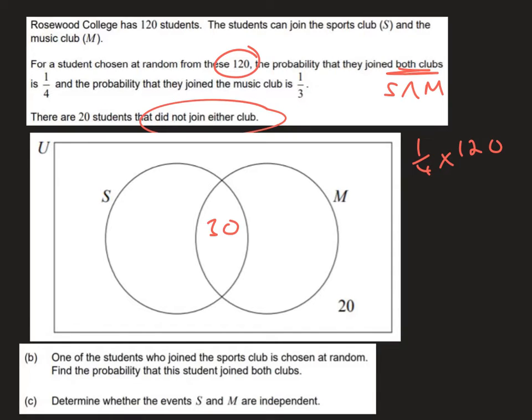We also know that the probability that a randomly selected person joins the music club is a third. So to find the number of students that's going to be a third of 120 which is going to be 40. Now remember that that means that there are 40 in the entire music club. So bearing in mind there's already 30 in here that must mean that there are only 10 in this section here.